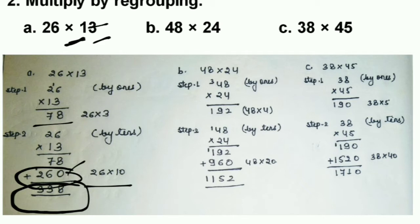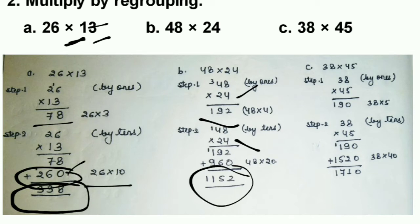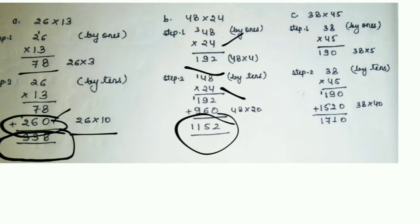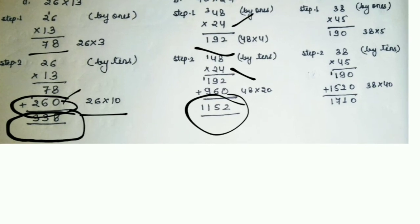Next: 48 multiplied by 24. First multiply by ones: 48 times 4 gives 192. Then 48 times 20 gives 960. Total is 1152. One more question has been solved — please go through it once.